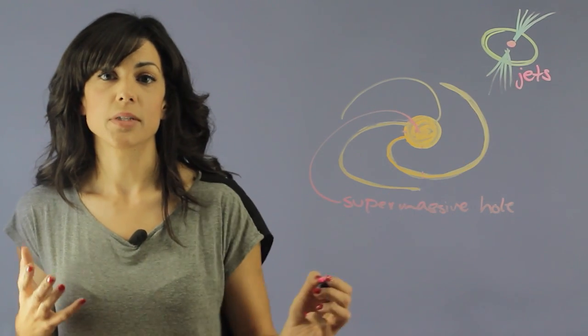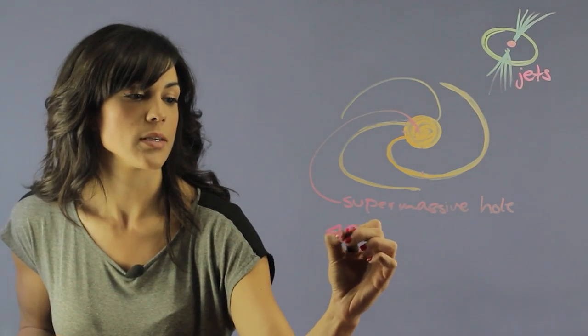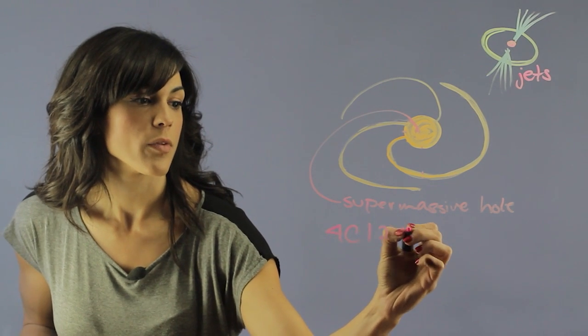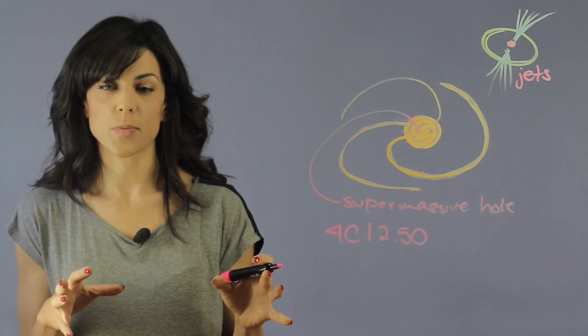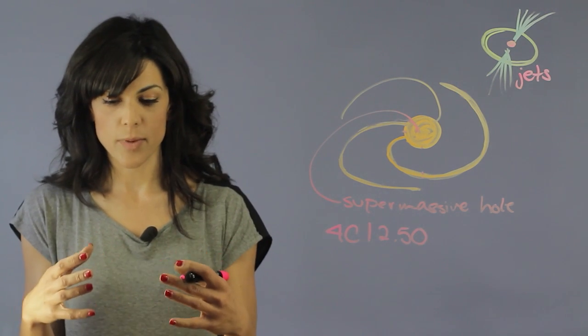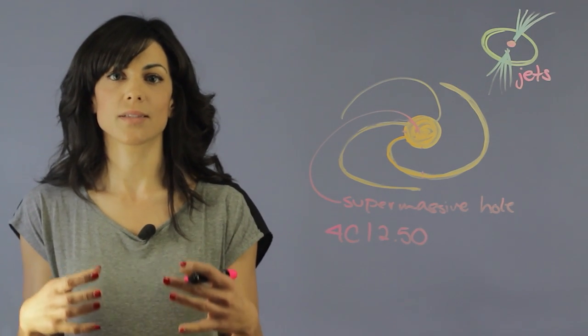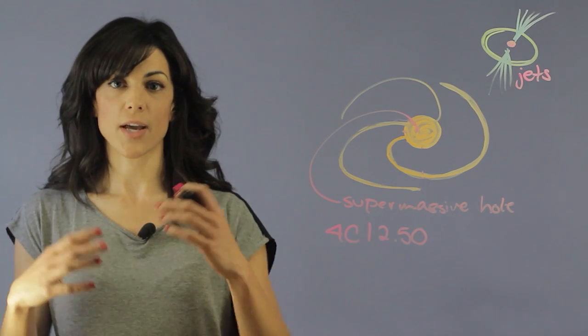Now recently, we did a study in a galaxy called 4C1250. And the reason this galaxy was interesting is because the supermassive black hole at the center was at the stage where it began to actually eject these jets.